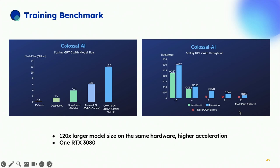Here are performance results. Going from PyTorch through various DeepSpeed configurations to Colossal AI, Colossal AI can run up to 120 times larger models than PyTorch and up to three times larger than DeepSpeed — even using disk — all running on a single cheap GPU. Comparing throughput against DeepSpeed, as model size grows up to 12 billion parameters, Colossal AI continues succeeding while DeepSpeed hits out-of-memory errors.